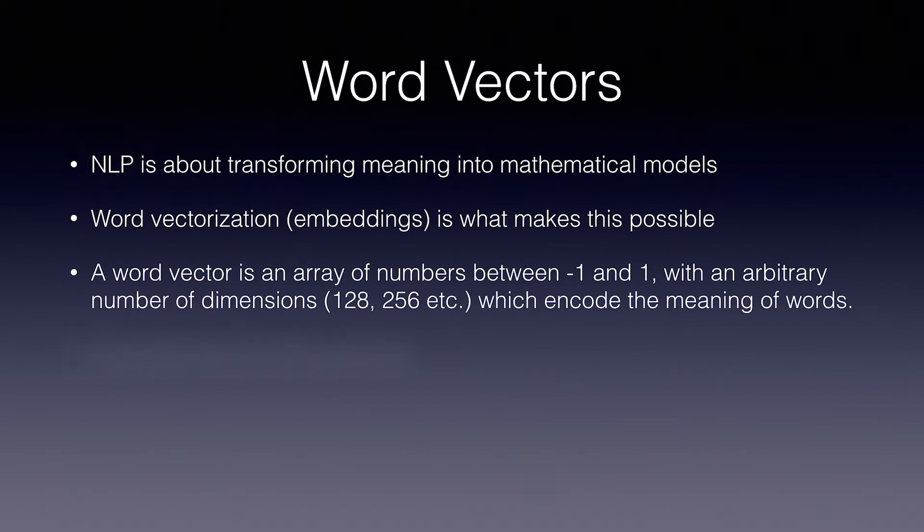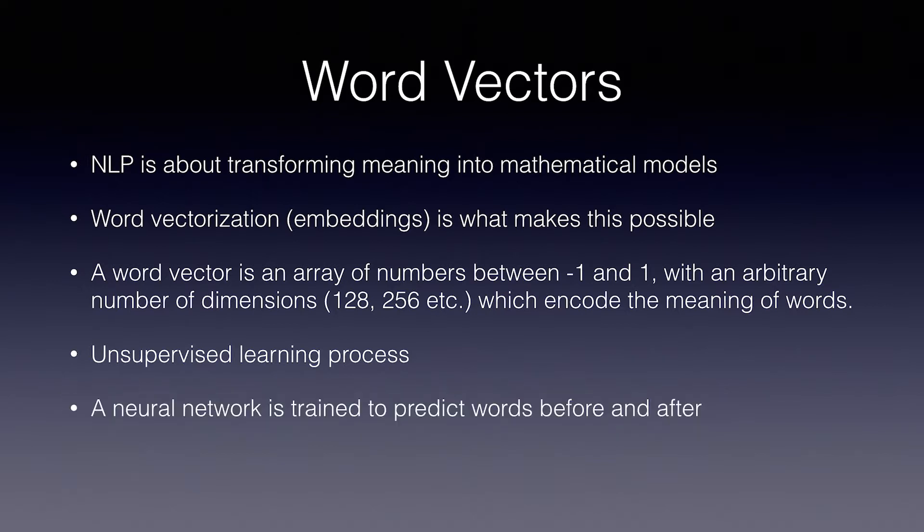So how does a computer build a mathematical model of what words mean? It's an unsupervised learning process, where a neural network with a single hidden layer the size of the embedding dimensions is fed a large volume of text and attempts to predict the word that comes both before and after the input word.